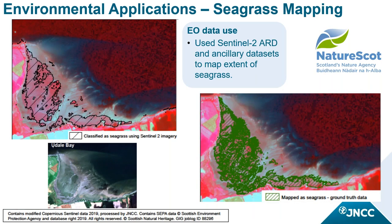Another example by NatureScot used our Sentinel-2 ARD data to map seagrass, demonstrating that the data can be used in shallow marine environments and has a lot of potential in the coastal zone. There are limitations to working with remote sensing data underwater, but it is possible to get useful data in clear waters up to 10, sometimes 15 metres depth depending on water conditions and turbidity. These highly dynamic environments are particularly difficult to map on the ground so the frequency of satellite data may be a valuable resource. It is worth noting that our ARD product has been optimised for terrestrial applications, so different pre-processing techniques can be applied to maximise information captured for water applications.